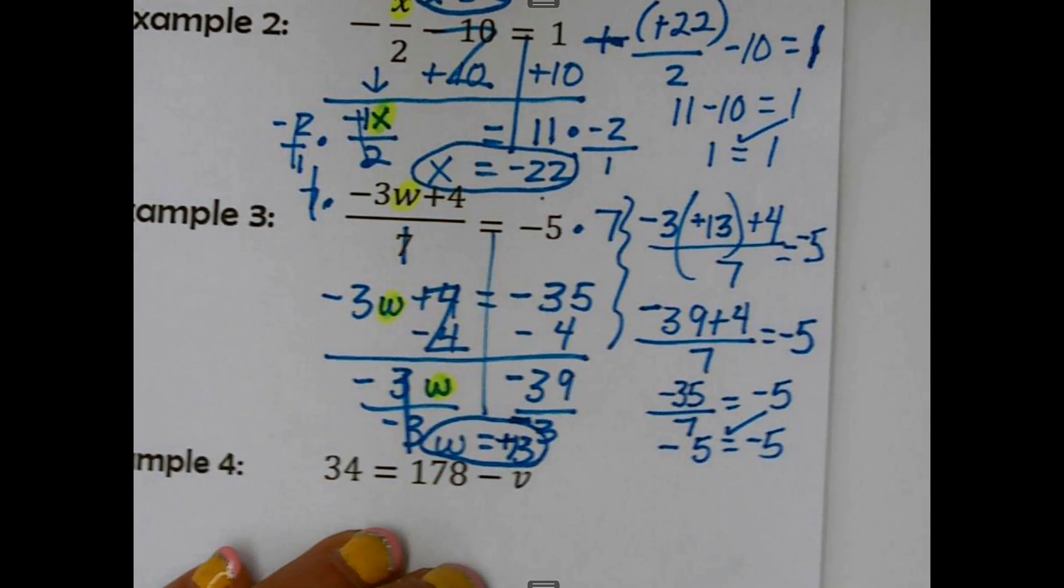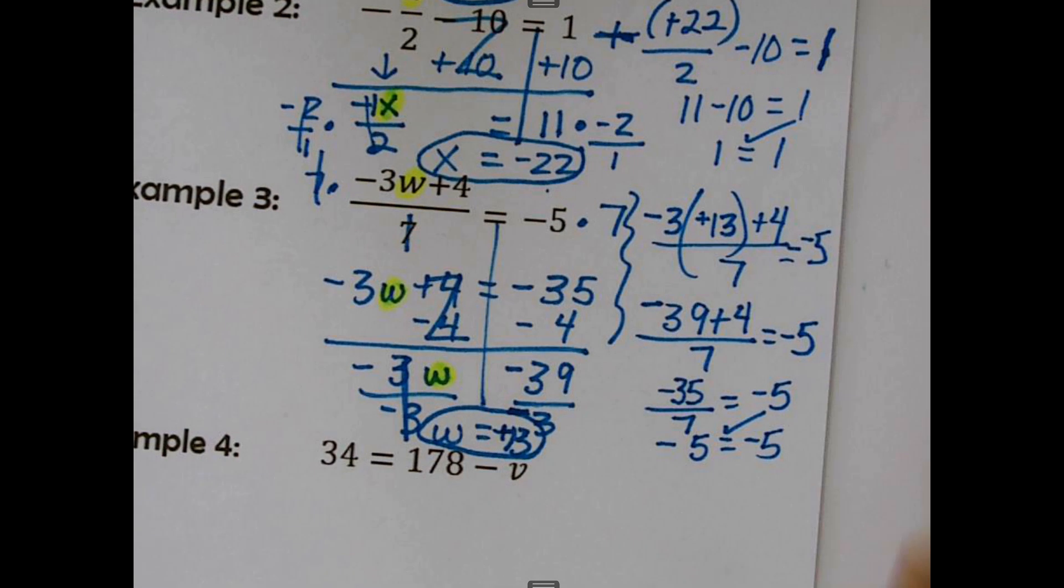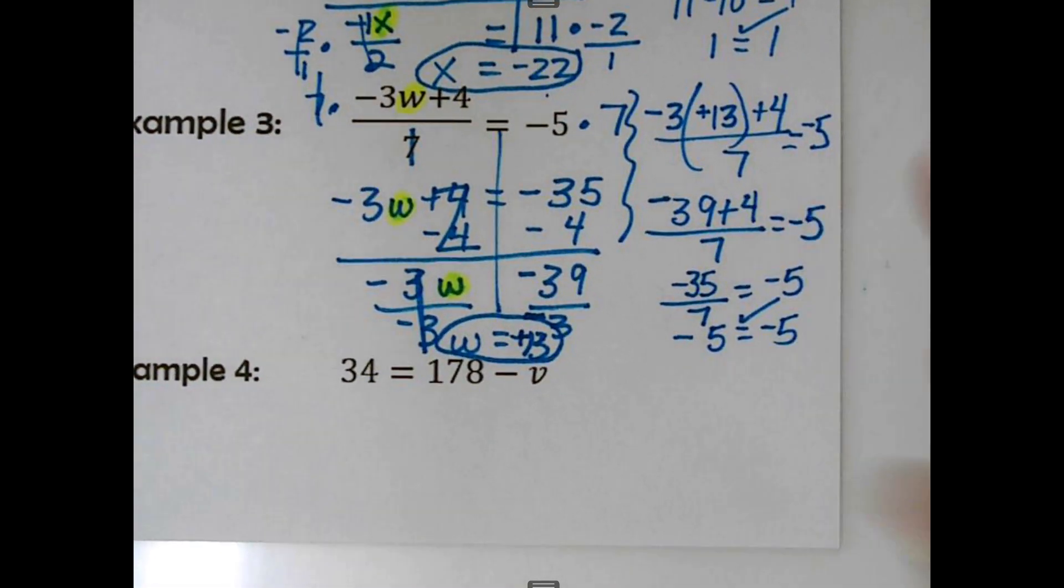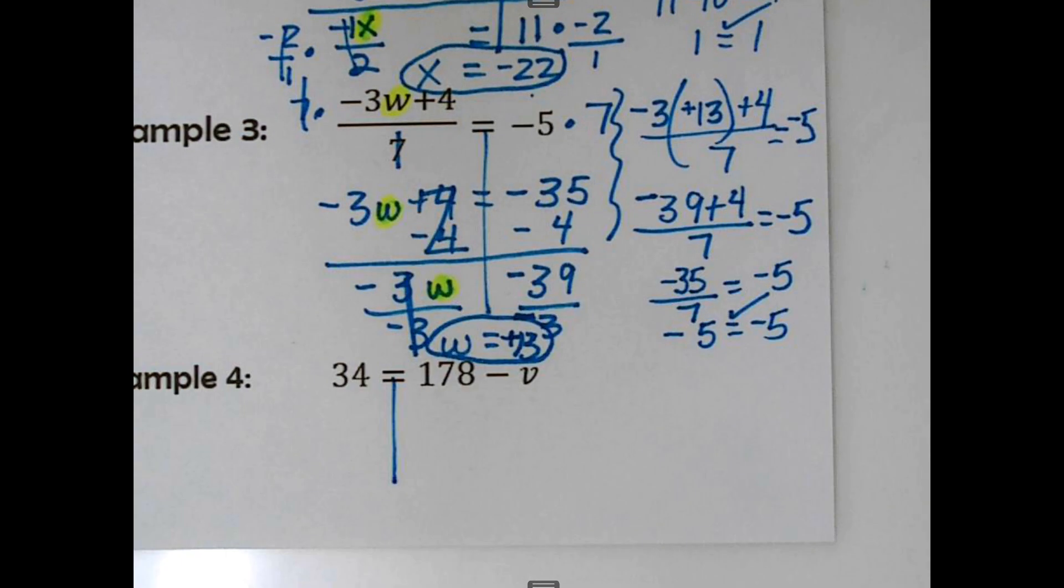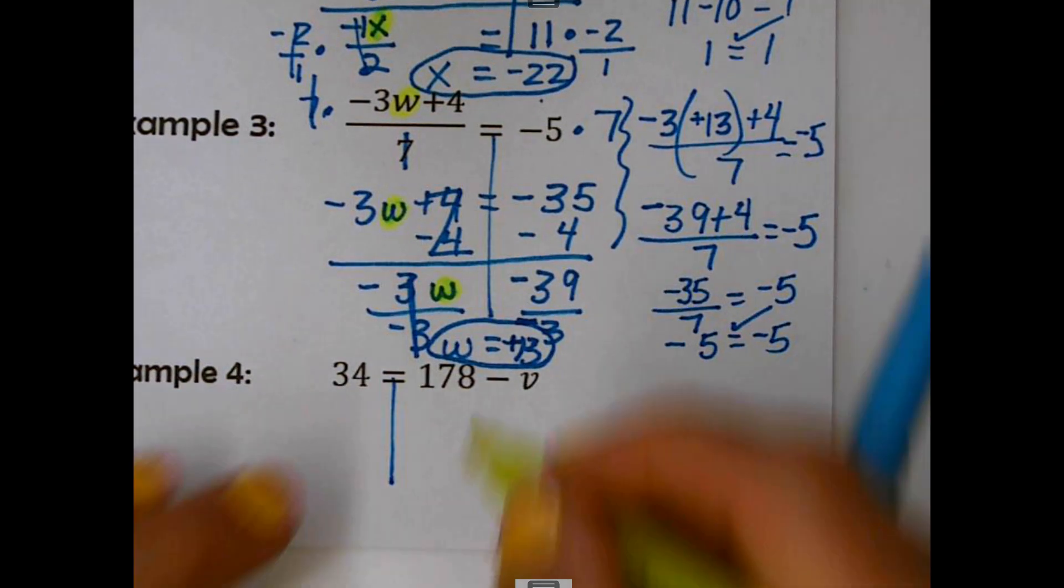All right. Last one. Hopefully this one will go a little bit quicker. So on the right-hand side, we have the variable. Let me highlight it. 178. That's a constant right now. And so we need to take that over the other side. You know, constants like to hang out with each other.